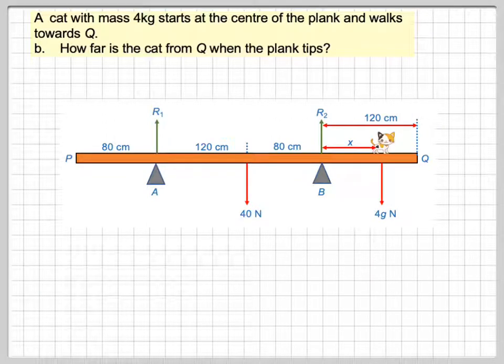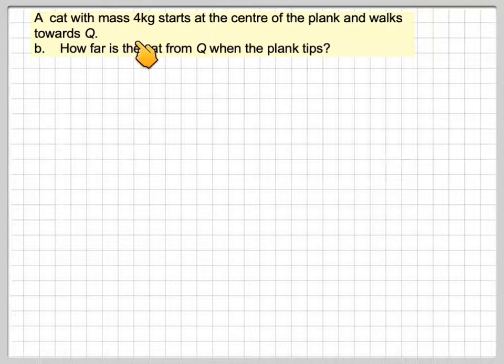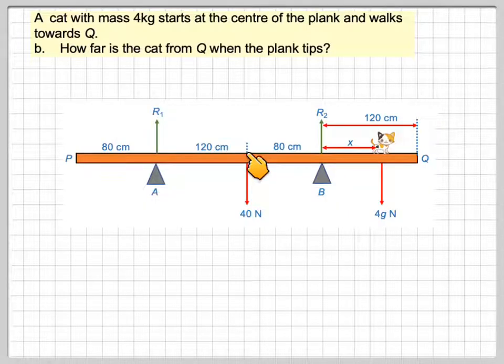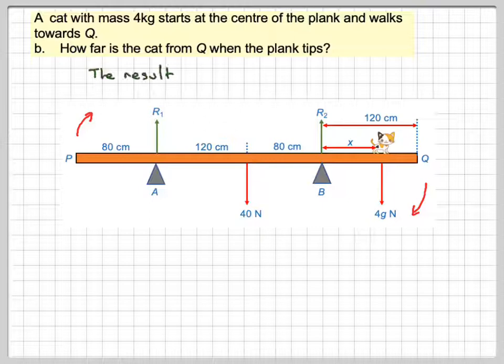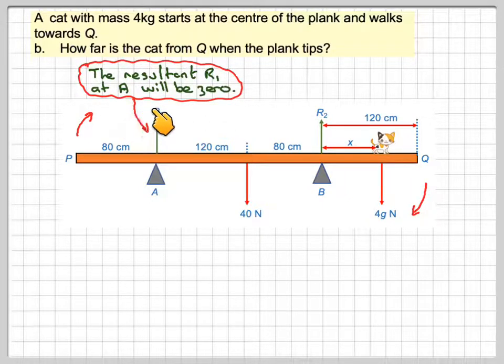So, a cat with mass 4 kilograms starts at the centre of the plank and walks towards Q. How far is the cat from Q when the plank tips? So what we've got is a cat that's going to start here, and obviously if it keeps walking this way, its weight will eventually tip the plank. But what we've got to bear in mind, when this goes up here, this point here will no longer be touching, and therefore there is no reaction force here, so the resultant R1 at A will be actually zero when this plank starts to tip.